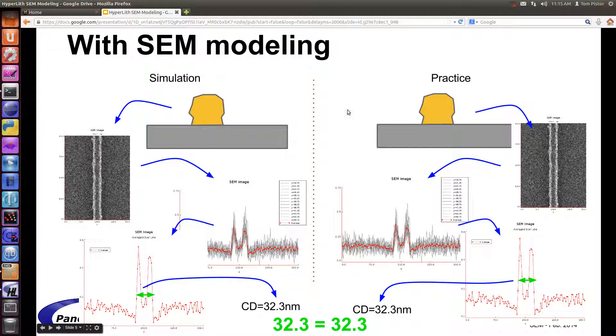With SEM modeling, you generate a simulated SEM image from the simulated resist profile. Then you have the ability to measure the simulated SEM image in the exact same way that you measure the experimental SEM image. This is a true apples-to-apples comparison, and you are comparing simulated SEM CDs to experimental SEM CDs.